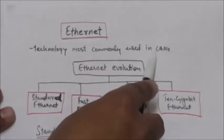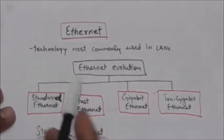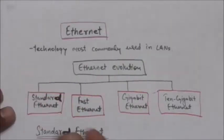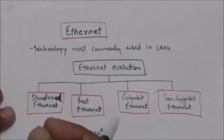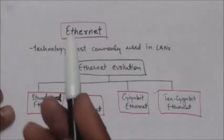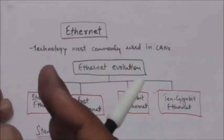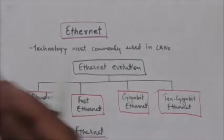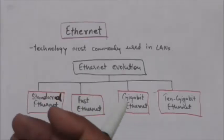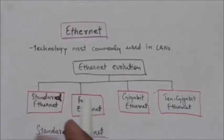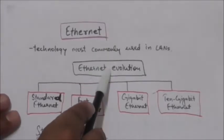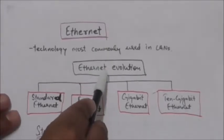The full form of LAN is Local Area Network. As we have already studied in previous tutorials, a LAN is a computer network that is designed for a limited geographic area such as a building or a campus. Ethernet was originally created in 1976.